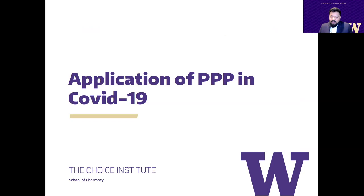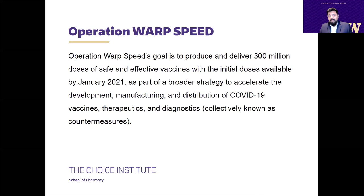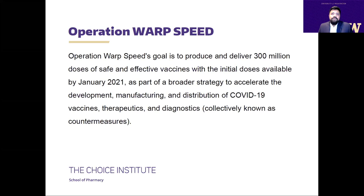Let's see how these insights translated to COVID-19 vaccine development. Among the many public health decisions made during this pandemic, Operation Warp Speed is a notable one. Operation Warp Speed is one of the most influential public policies in the U.S. vaccine space in a long time. Its goal is to produce and deliver 300 million doses of safe and effective vaccine with initial doses available by January 2021, as part of a broader strategy to accelerate development, manufacturing, and distribution of COVID-19 vaccines and therapeutics.